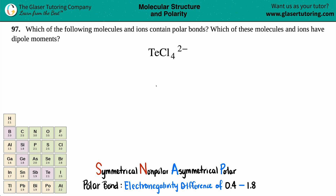Number 97: which of the following molecules and ions contain polar bonds, and which of the molecules and ions have dipole moments? We have TeCl₄²⁻. So we have to find out if this ion has polar bonds and if it has a dipole moment.